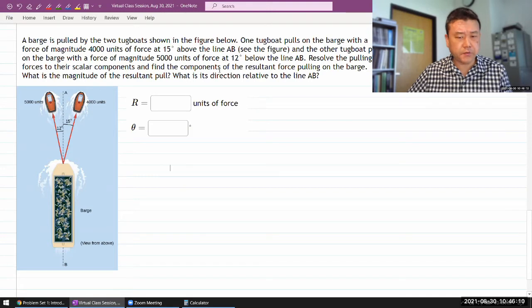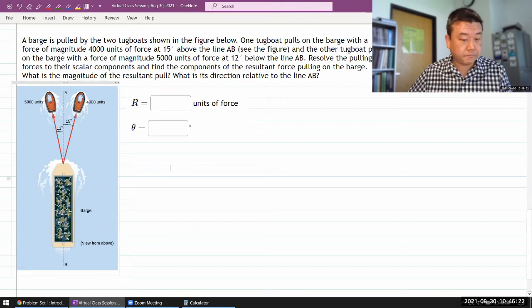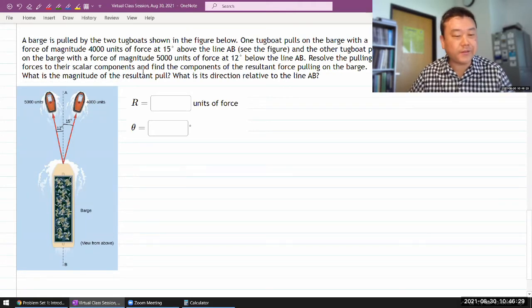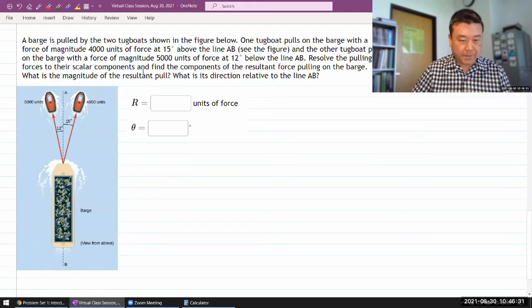And find the components of the resultant force pulling on the barge. What is the magnitude of the resultant pull? What is the direction relative to the line AB? I don't know why it says scalar components—it's a vector addition question. So let me just label my vectors so that I have some way to refer to them.